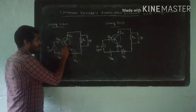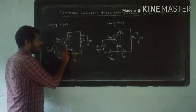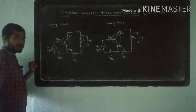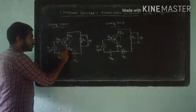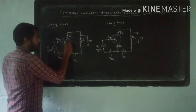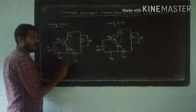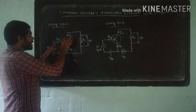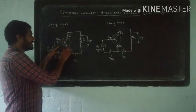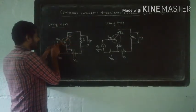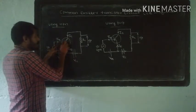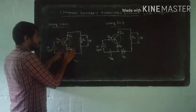There is the collector current, base current, and emitter current. The junction rule states that IB plus IC is equal to IE.